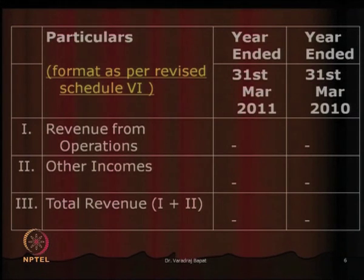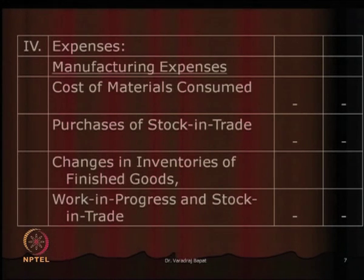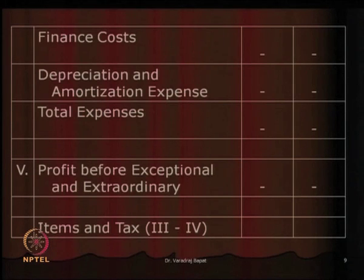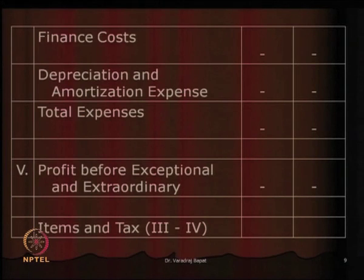After this we went to the format as per company law, where a little more elaboration exists. Revenues are shown first, then expenses are deducted. They have been categorized into different categories: manufacturing expenses, admin and selling expenses, other expenses, finance cost, and depreciation and amortization expense. Revenue minus total expenses gives profit before exceptional and extraordinary items. We also reduce these items to get profit before tax.